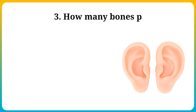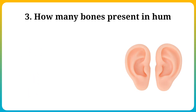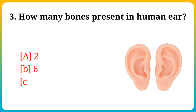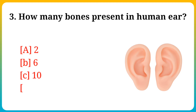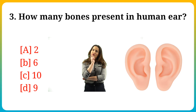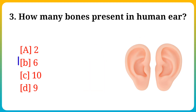Question number 3. How many bones are present in the human body? Option A: 2, B: 6, C: 10, D: 9. Answer is option B: 6.